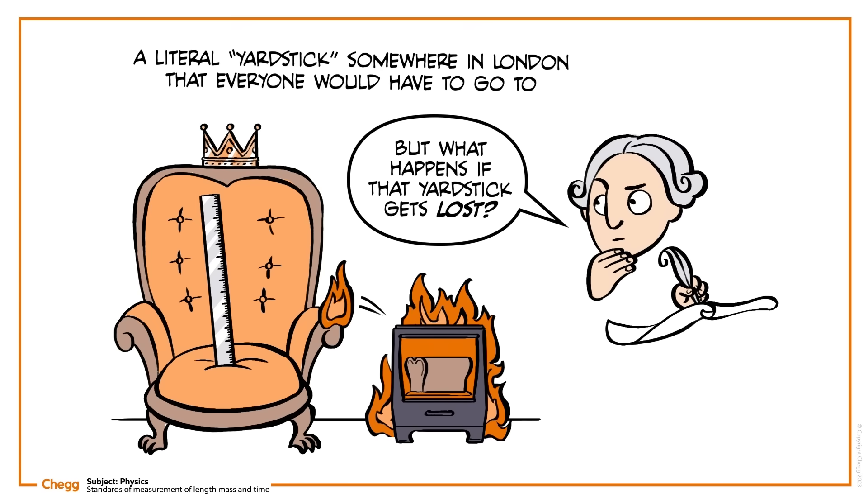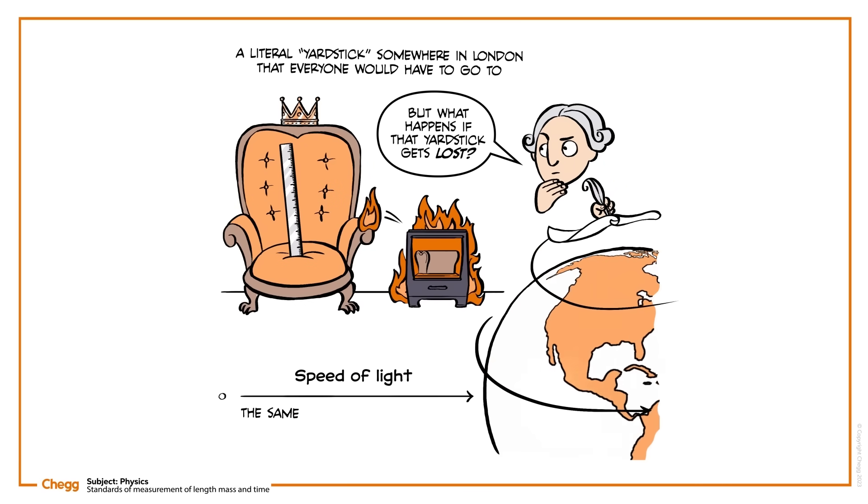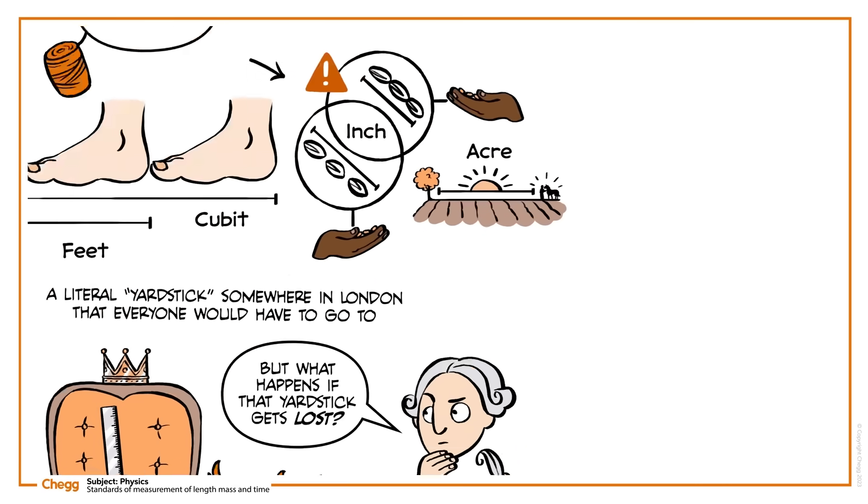Big brains have been trying to figure this out for a long time, and have only recently moved to a system of universal units, units that are defined in relation to universal constants. That is, things like the speed of light, which is the same all over the universe. Let's learn about some of these measurements and how we define them.